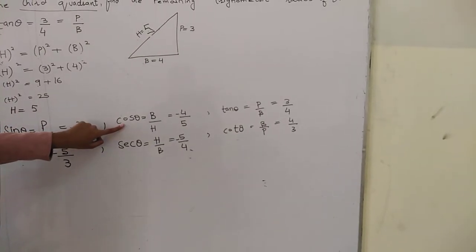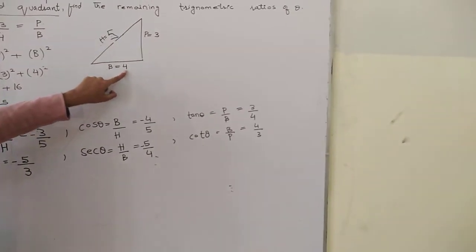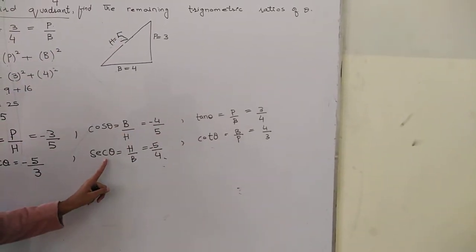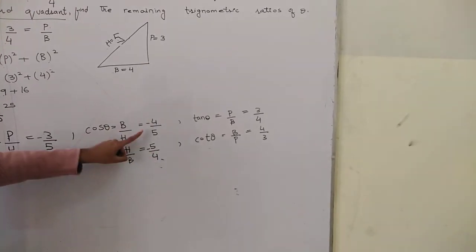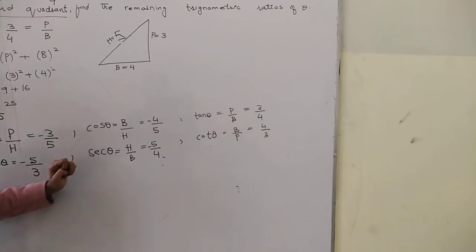The next question is cosine. Cosine is base over hypotenuse. The base is 4 and hypotenuse is 5, so 4 over 5. And this is negative because in the third quadrant, cosine is negative. So cosine equals negative 4/5.